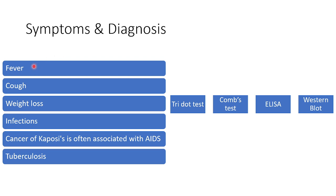Symptoms and diagnosis: fever, cough, weight loss, repeated infections, Kaposi's sarcoma, and tuberculosis are the normal symptoms. It can be diagnosed by certain tests, namely the Tridot test, Coombs test, ELISA, and Western blot. Western blot is the confirmatory test for AIDS.